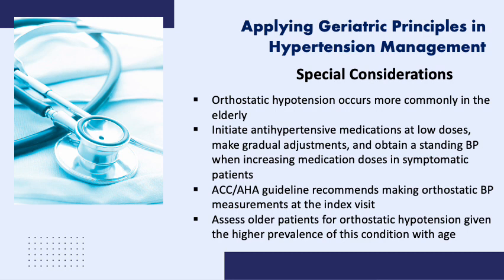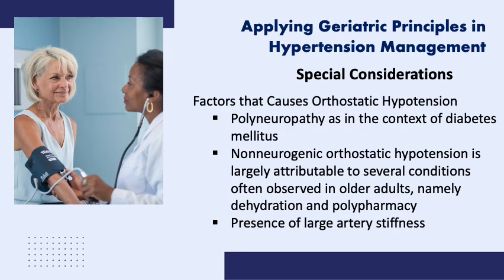It is also very prudent to assess older patients for orthostatic hypotension given the higher prevalence of this condition with age. This can occur as a result of polyneuropathy, as in the context of diabetes mellitus. Non-neurogenic orthostatic hypotension is largely attributable to several conditions often observed in older adults, namely dehydration and polypharmacy, especially in cases of vasodilators, diuretics, and psychotropic medications. In addition, the presence of large artery stiffness leads to impaired activation of the baroreflex and inappropriate blood pressure over heart rate response to postural changes.